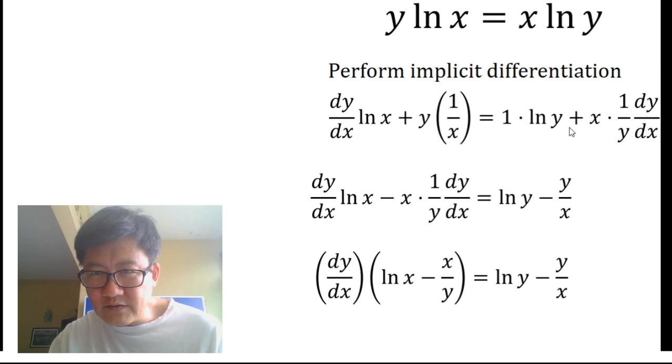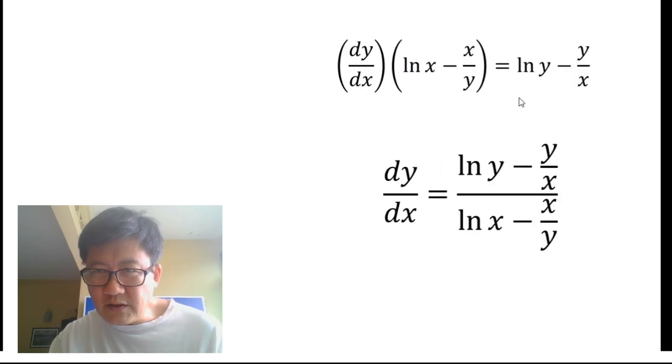In a similar way, we bring all the terms that don't include dy/dx to the other side. So this term comes over to this side, and we factor out dy/dx. That's what we have: dy/dx times (natural log x minus x over y) equals natural log of y minus y over x.